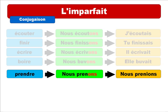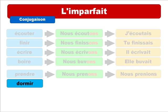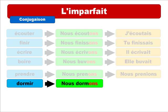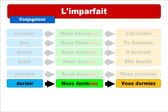Let's take dormir — 'to sleep' — and I hope you don't fall asleep during this lesson! For nous at the present form, we have 'nous dormons.' We spot the ending, take it away, then add the vous imparfait ending, and we get 'vous dormiez.'